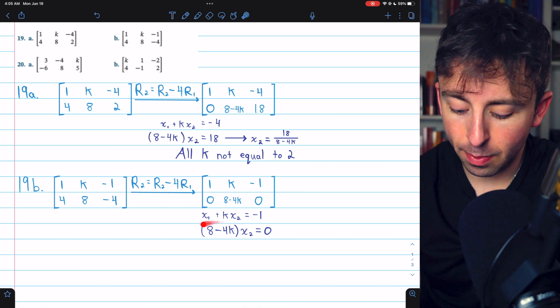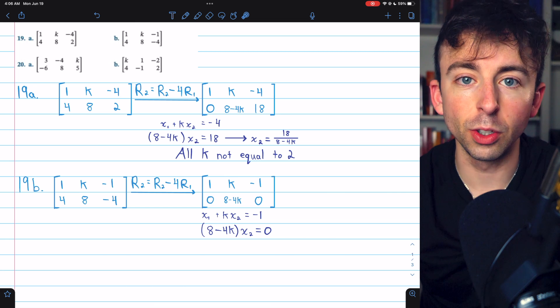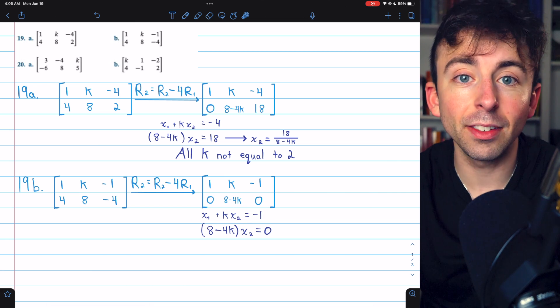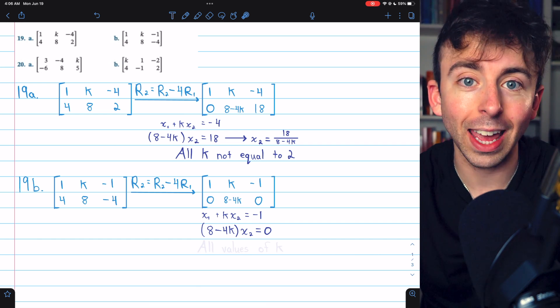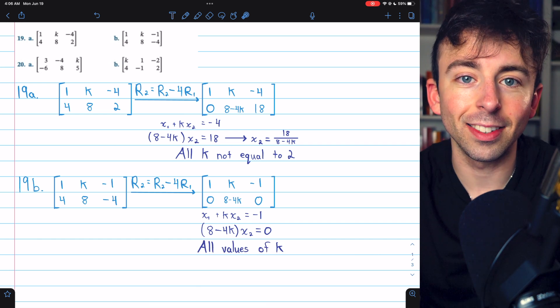Regardless, for any value of k, this equation would work out fine and give us a value for x2, and then that would give us a value for x1. So no matter what k is, we get a solution. The system is consistent for all k. So again, our answer is all values of k lead to a consistent system.